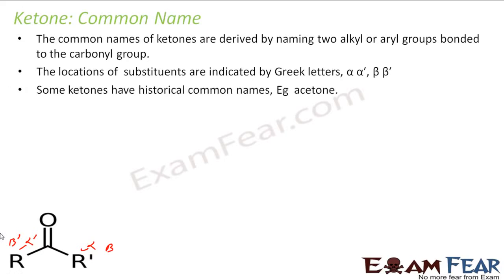Some ketones have a historical common name. For example, acetone. This is CH3-CO-CH3. This is called acetone and has a historical common name.